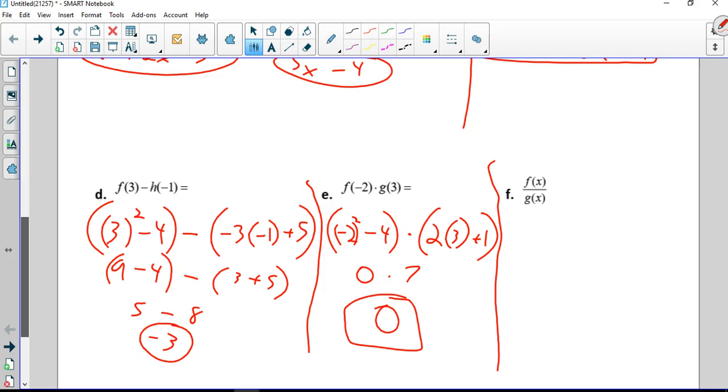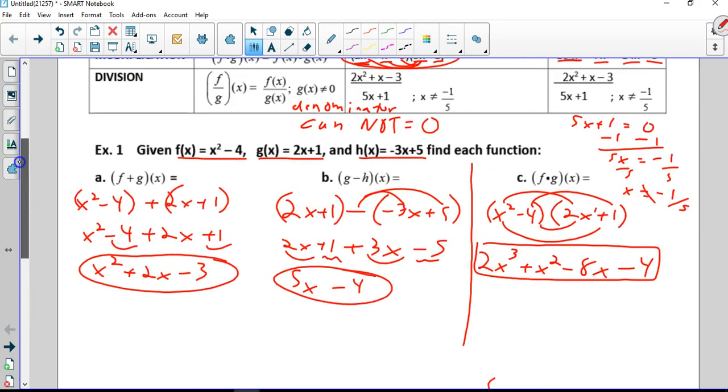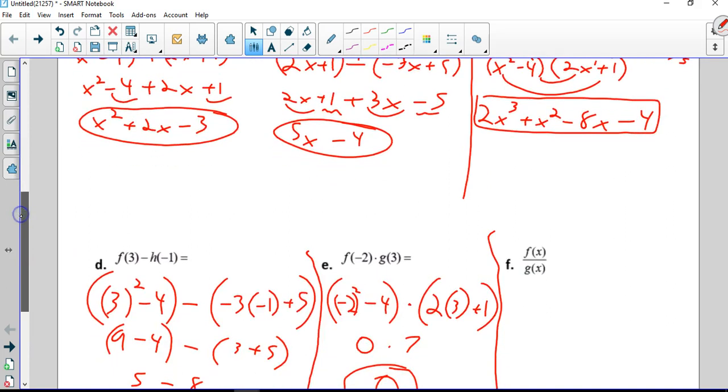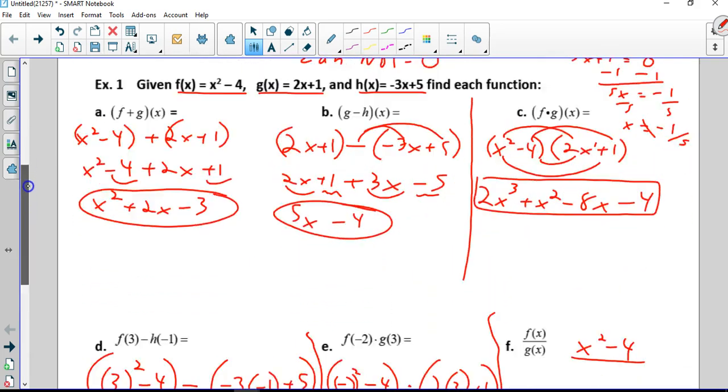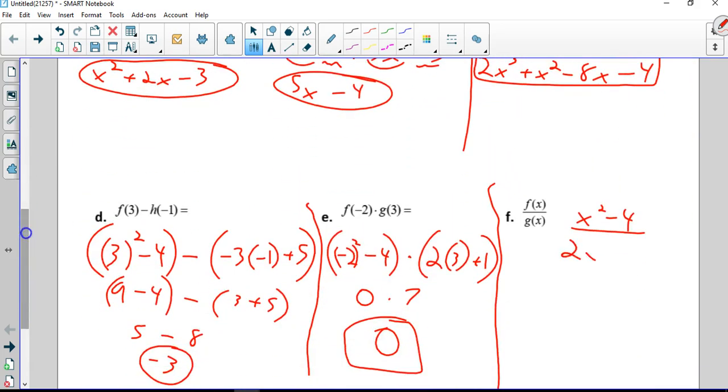And then we're going to do f of x over g of x. x squared minus 4 over 2x plus 1. We need to find out what the bottom cannot be, so 2x plus 1 equals 0. 2x equals negative 1, x equals negative 1 half, that's what x cannot be.